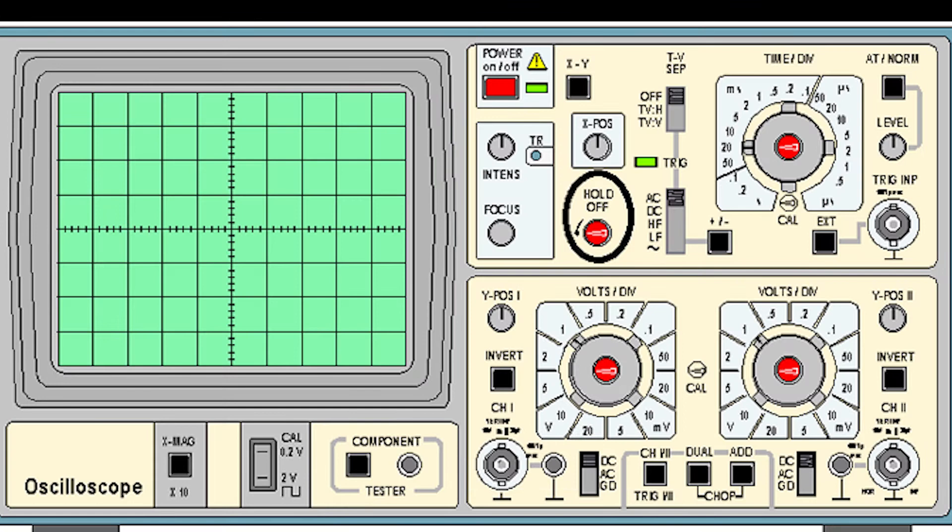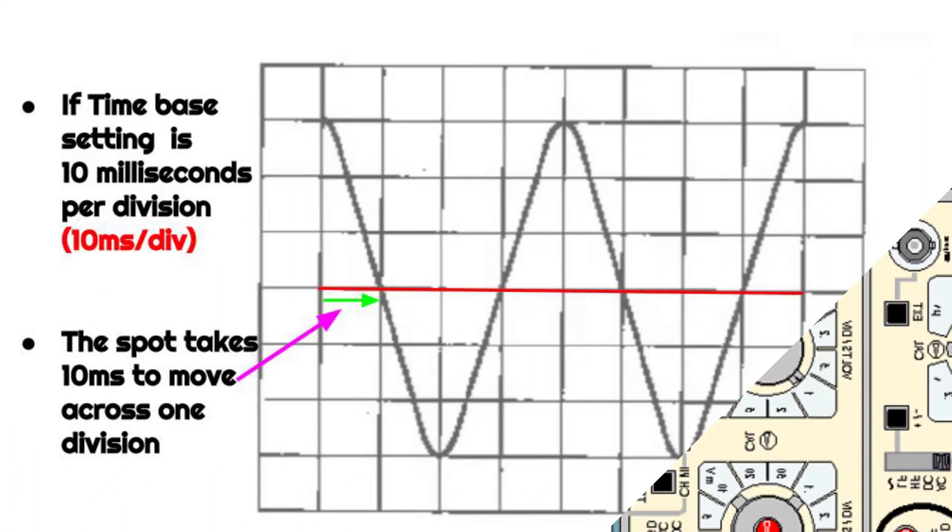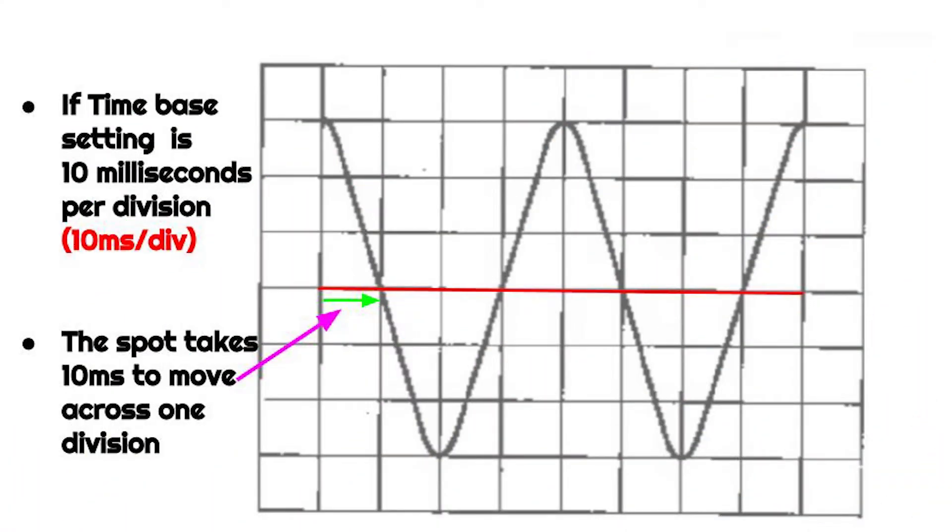Before we start discussing the uses, there are a few basics you need to understand about the cathode ray oscilloscope. First, you need to be aware that the time base tells you how many seconds each division represents. For example, if our time base reading is 10 milliseconds per division, it means the spot takes 10 milliseconds to move across one division.